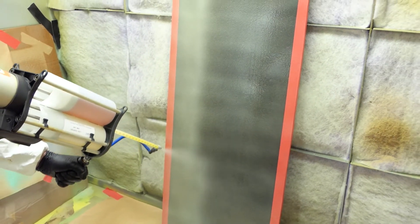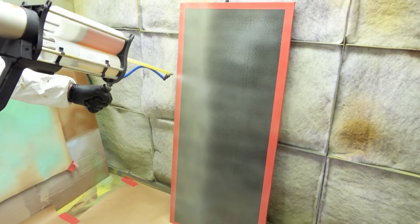If applying multiple coats, wait 8 to 14 minutes between coats. When applying multiple coats, spray in a cross pattern. If the first coat was left to right, then the second coat should be sprayed top to bottom or vice versa.